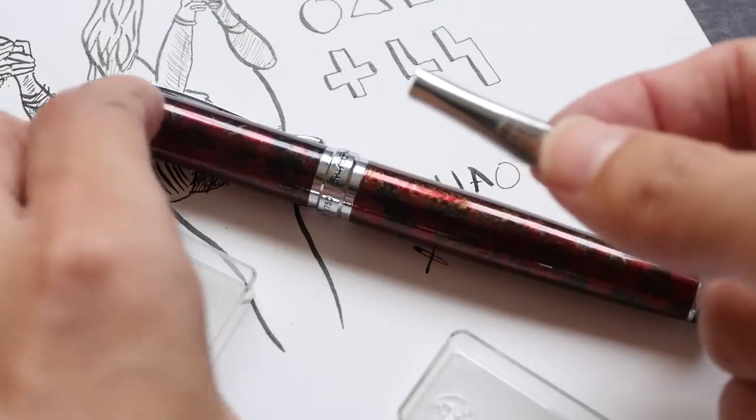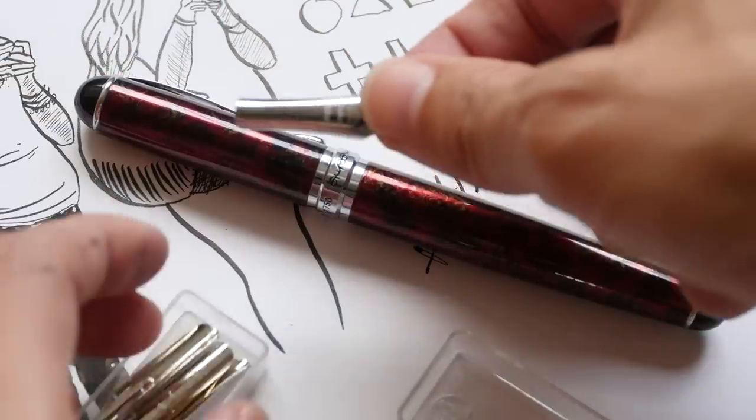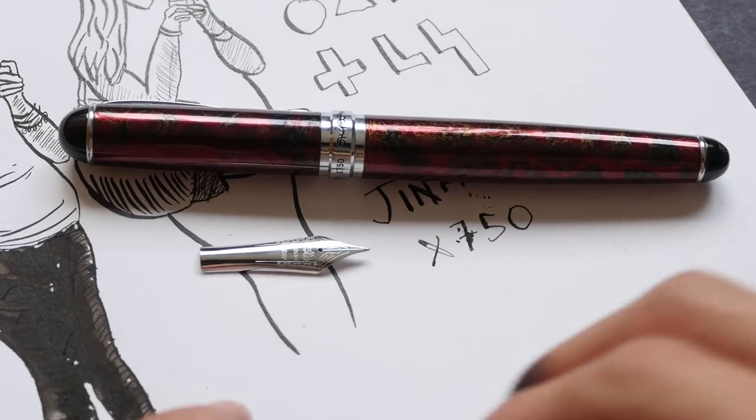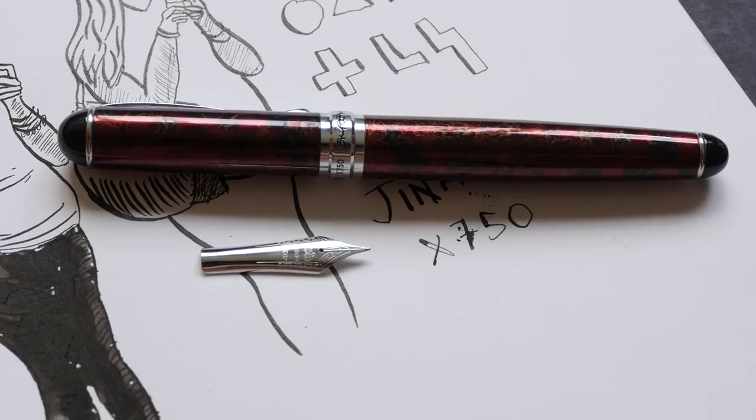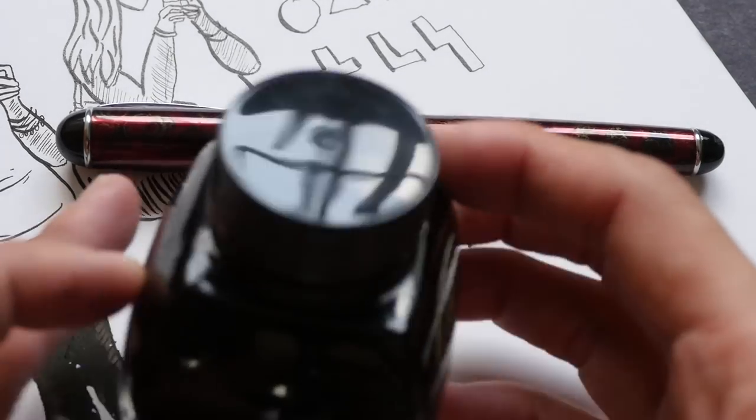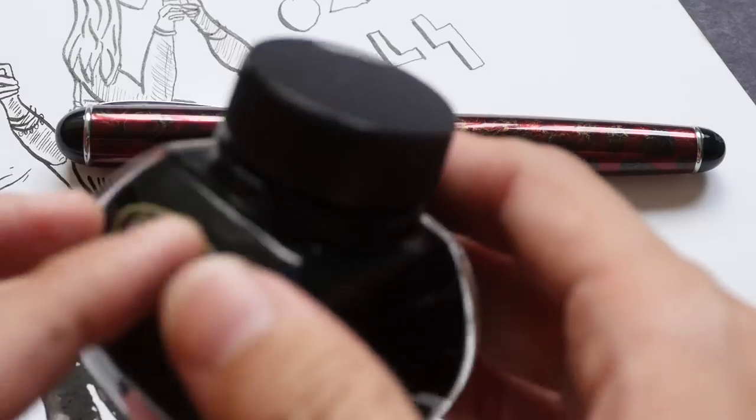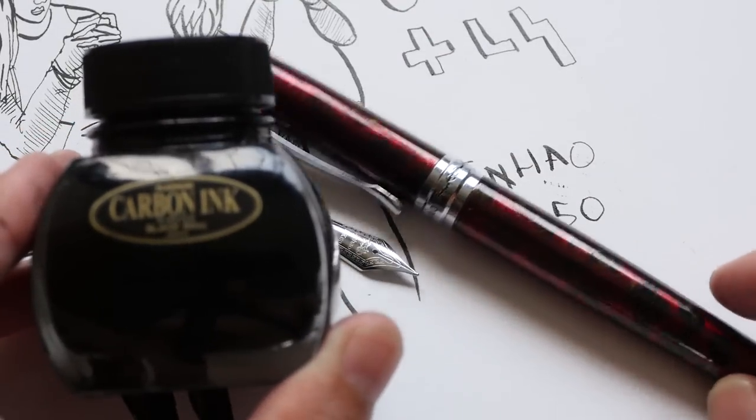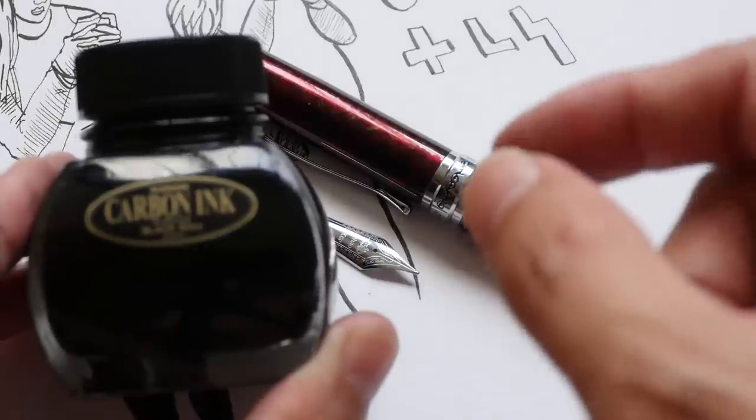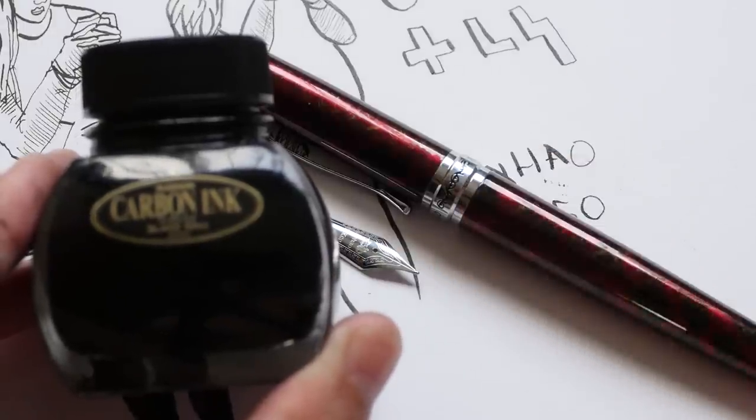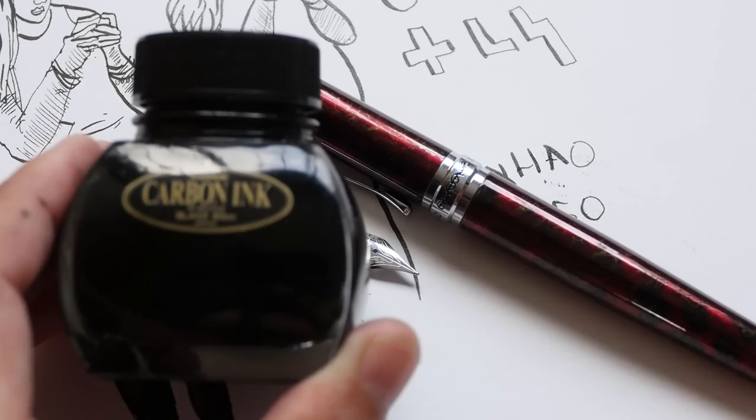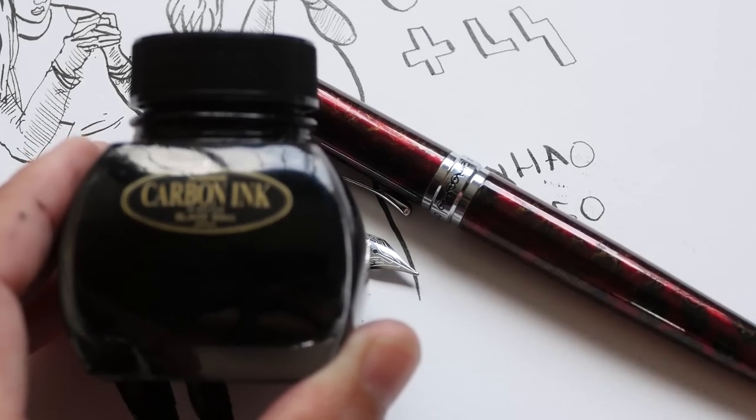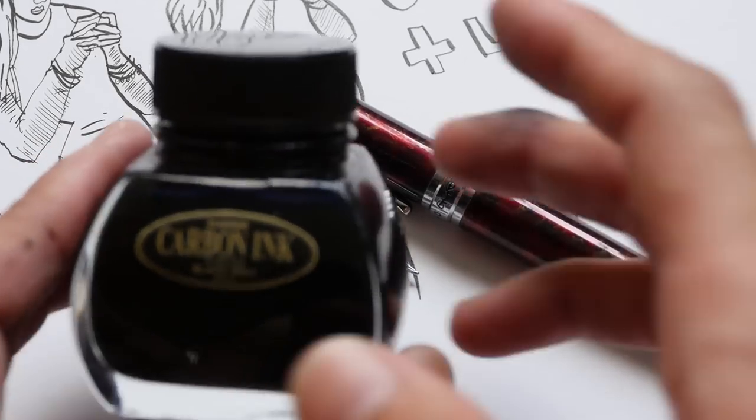And this is actually the original nib of the fountain pen. And of course you need ink. The performance of the pen will depend on the ink itself. So I tried Noodler's ink and sometimes when I flex it the ink will split up. It's easier to split up using Noodler's ink. But your experience may differ. So I'm using platinum carbon ink here.